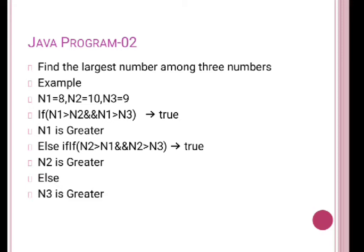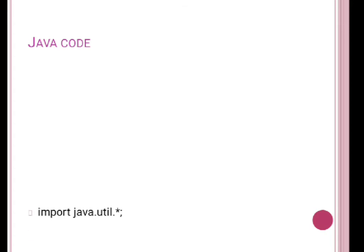Otherwise, we use else-if where n2 is greater than n1 and n2 is greater than n3 — note: it should be n3, not n2 written twice, that is a typo in the slide. If both conditions are not satisfied, then ultimately n3 is the largest number.